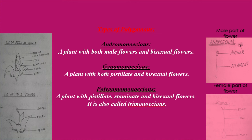The next type is gynomonoecious: it bears female flowers containing the gynoecium and bisexual flowers on the same plant. Next is the polygamomonoecious plant, also called trimonoecious. A plant with pistillate flowers, staminate flowers, and bisexual flowers all on the same plant. A flower containing the gynoecium is termed pistillate; a flower containing only the androecium is staminate; and the bisexual flower contains both androecium and gynoecium. If these three types of flowers are present in one plant, it is called trimonoecious or polygamomonoecious.